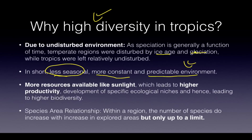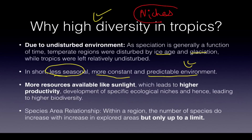Ice age and glaciation did not occur here, so environmental conditions are relatively undisturbed. Species had a lot of time to evolve and find their own niches. When niches are specific, there is less competition. More resources like sunlight lead to higher productivity and higher biodiversity. An ecological niche means a particular function performed only by that particular species in their own particular area.